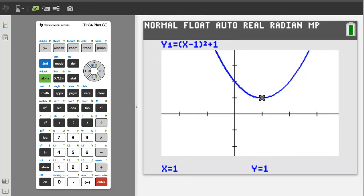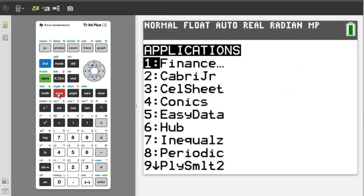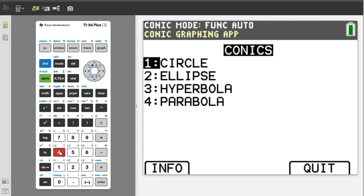Another way to find the vertex that might be faster and will also give you the focus and the directrix is by using the conics app. Press the apps button. We want number 4, conics. Press the 4 button. And we want number 4, parabola. So press the 4 button.